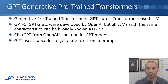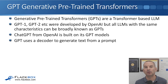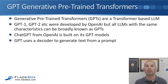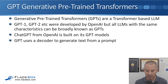Generative pre-trained transformers (GPTs) are a transformer-based LLM. GPT-1, GPT-2, GPT-3, and GPT-4 were developed by OpenAI, but all LLMs with the same characteristics can be broadly known as GPTs. ChatGPT, also from OpenAI, is built on its own GPT models, and GPT uses a decoder to generate text from a prompt — for example, entering a text prompt asking it to build out an OSPF configuration and it generates that configuration.